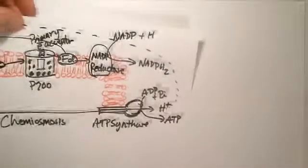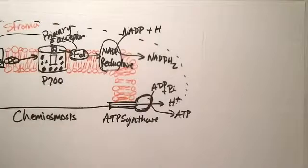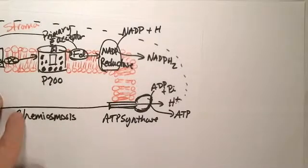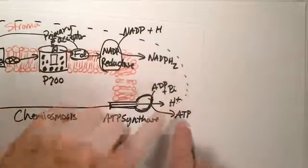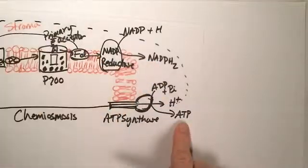If you have not seen the light-dependent reaction, that needs to be taken care of first. The light-dependent reaction provides the energy for the light-independent reaction for the Calvin cycle to fix carbon. So let's go ahead and get started here.